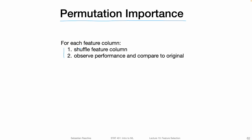How it works in a nutshell: for each feature column in a dataset, we shuffle that feature column. Then we take an existing trained model and observe the performance of that model on the shuffled dataset — the dataset with a shuffled feature column — and compare it to the original performance of the model. There is usually a drop in performance if we shuffle the feature column, and this drop gives us an indicator of how important that feature is.